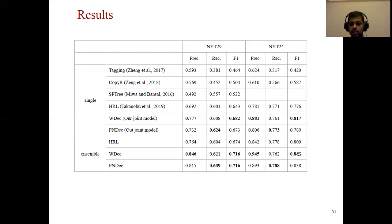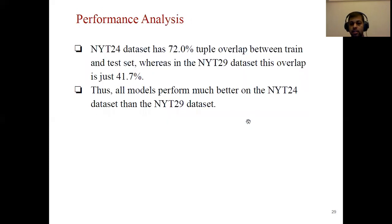Looking at performance on the two datasets, there is a significant gap between NYT-29 and NYT-24 — around 12 percent. We analyzed the reason: the NYT-24 dataset has 72 percent tuple overlap between training and test data, whereas NYT-29 has only 42 percent. Basically, during training the model has already seen 72 percent of test tuples in NYT-24, which is why it performs better on NYT-24.